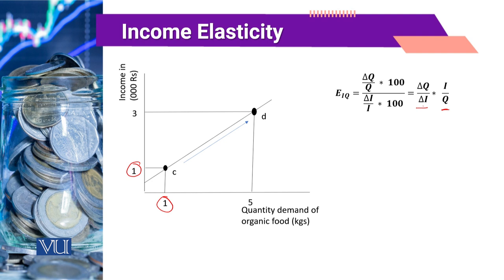If our objective is to compute the income elasticity of demand at point C, we look at the slope of the curve. The change in quantity between points C and D is equal to 4, and the change in income between these two points is equal to 2 — income at D is Rs. 3,000 and at C is Rs. 1,000. So change in Q over change in income equals 4 over 2. Income at point C is 1 and quantity demanded at point C is also 1, giving a computed elasticity value of 2.